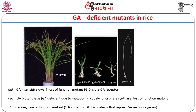One such mutant, GA-insensitive dwarf or GID1, led to the discovery of the GA receptor, while another mutant GID2 led to the discovery that GA signaling involved proteasome-mediated degradation of repressors. Another mutant, slender rice or SLR1, showed a constitutive GA response phenotype and coded for a DELLA protein that acts as a repressor of GA responses in wild type plants.